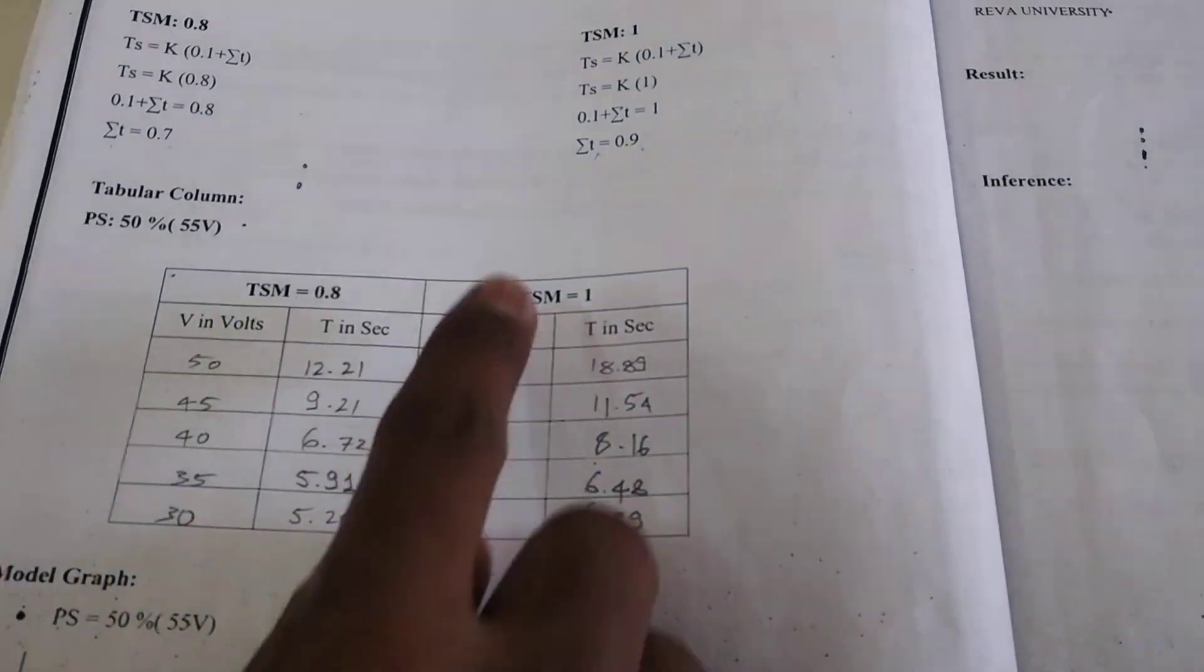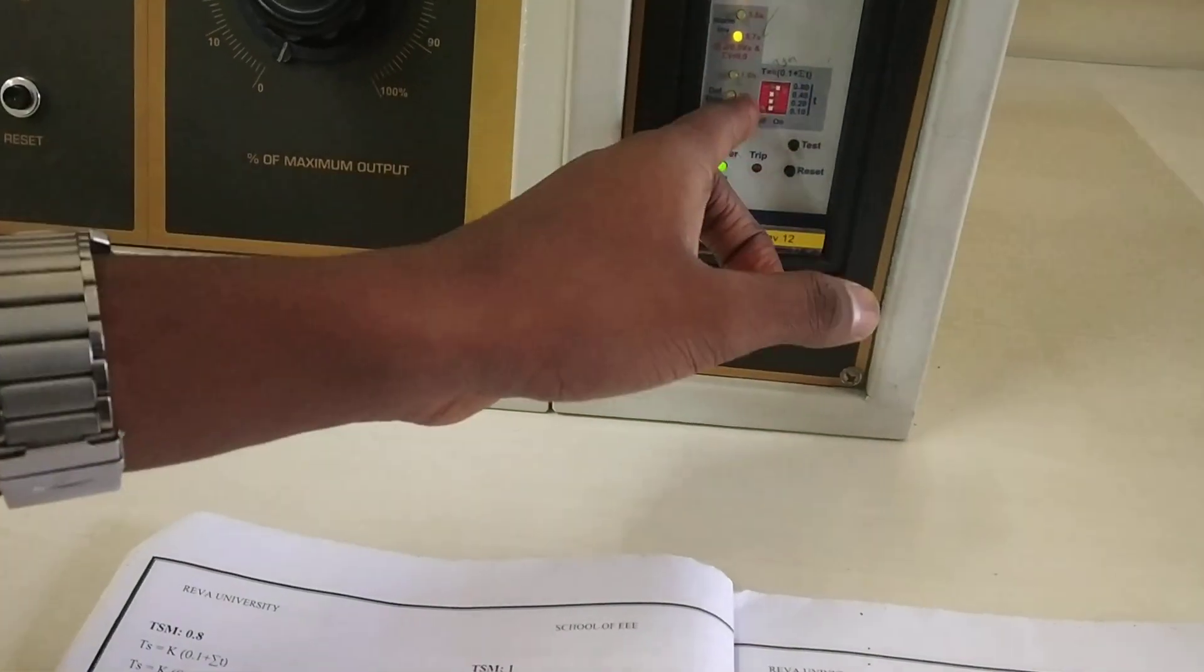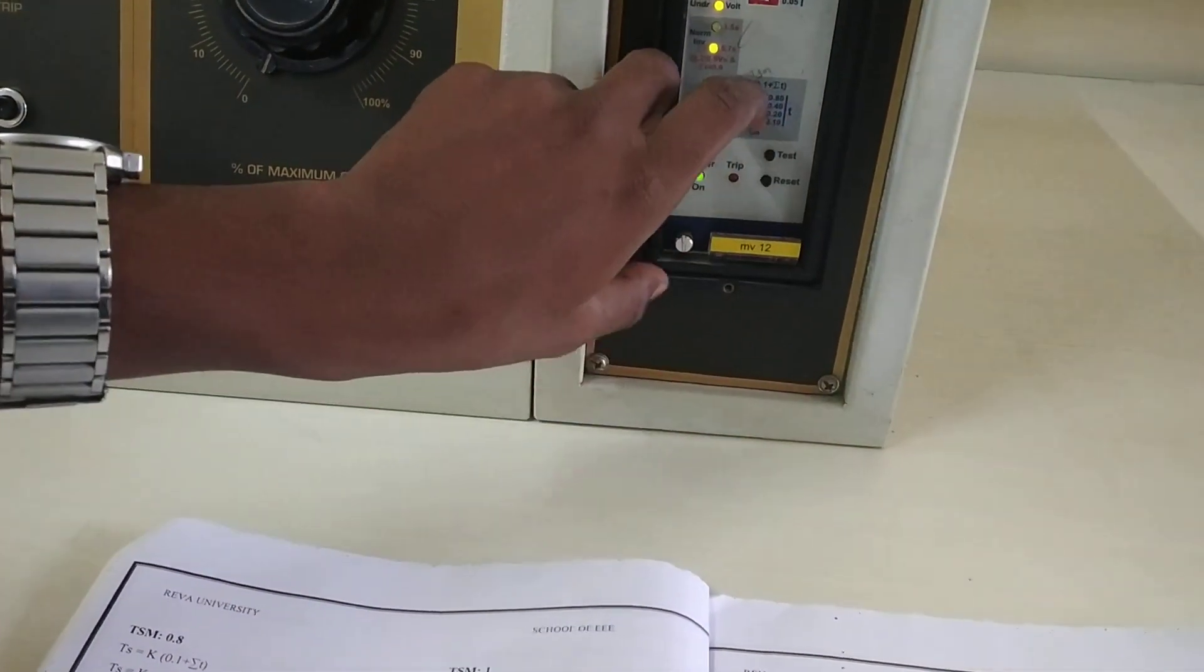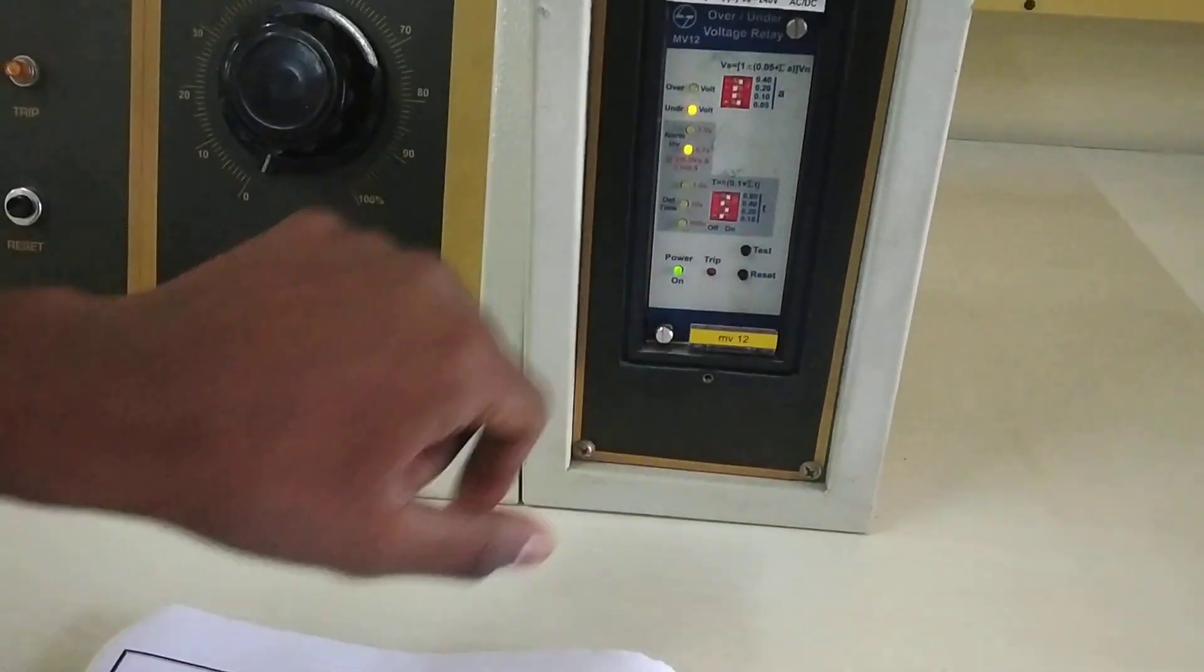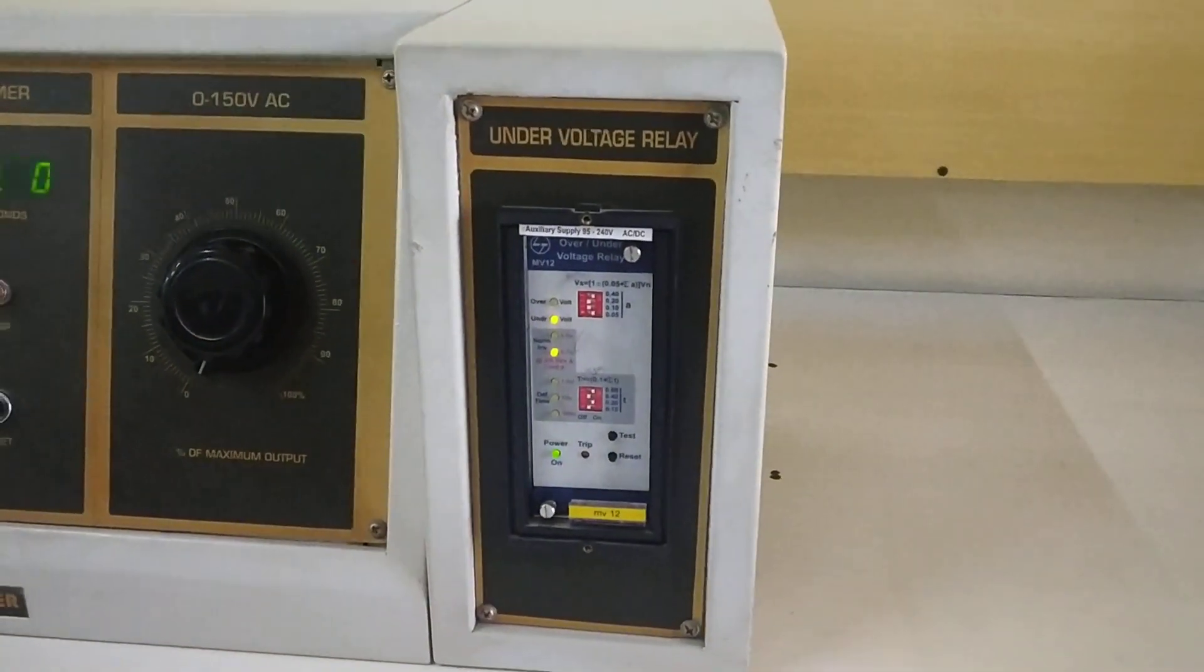This is the tabular column. You should set the TSM as 1 for the next case by moving the point to this side. You should set the TSM as 1 and continue in the same way.